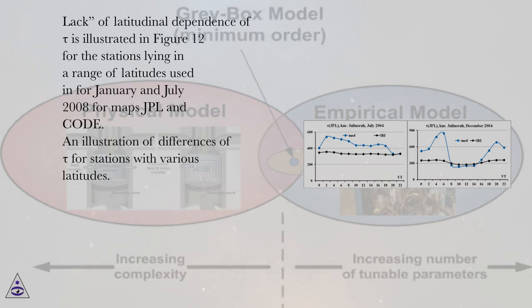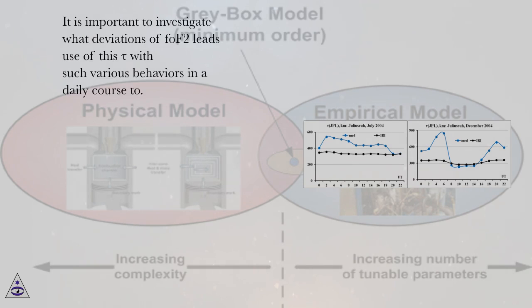Lack of latitudinal dependence of tau is illustrated in figure 12 for the stations lying in a range of latitudes used for January and July 2008 for maps JPL and CODE. An illustration of differences of tau for stations with various latitudes. It is important to investigate what deviations of FOF2 leads use of this tau with such various behaviors in a daily course to.